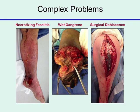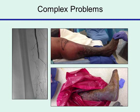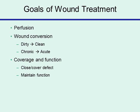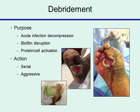Complex problems present frequently in the hospital environment regarding wounds and infection. Examples include necrotizing fasciitis, wet gangrene, and surgical dehiscence. Complex problems also present in the form of severe vascular disease, including significant occlusion on an angiogram, a gangrenous limb, and amputation. The fundamental principles include inpatient management focusing on wound and medical management, serial operative room debridement, targeted antibiotic therapy, and functional reconstruction and planning. The goals of wound treatment include perfusion restoration, converting a wound from dirty to clean and chronic to acute, and providing coverage and function through closure.